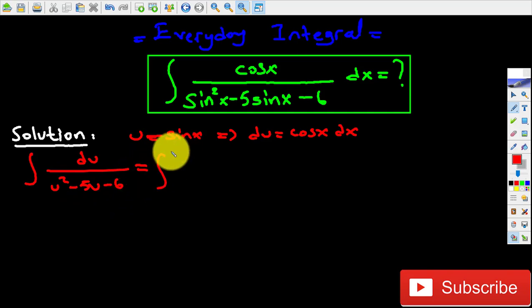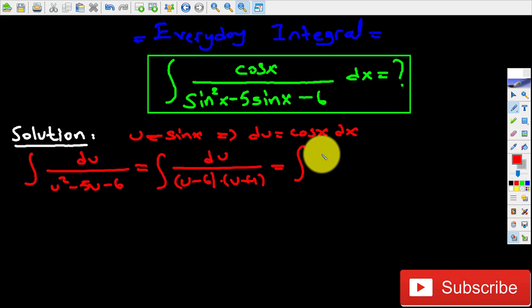Du over (u minus 6) times (u plus 1). Let's go one step further. That's going to be equal to A1 over (u minus 6) plus A2 over (u plus 1) du.